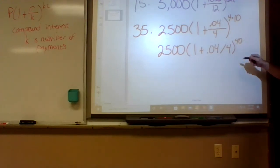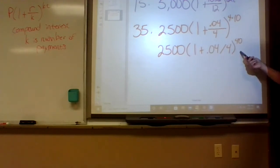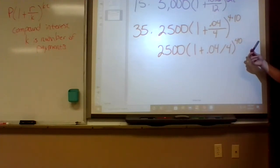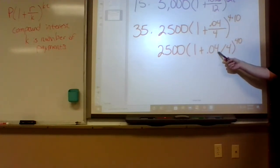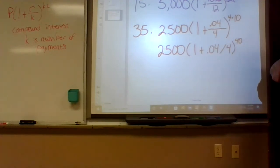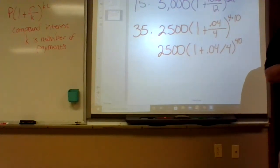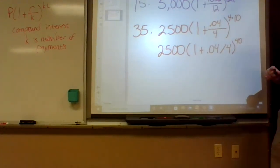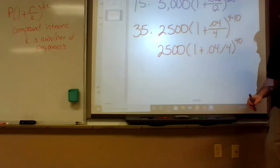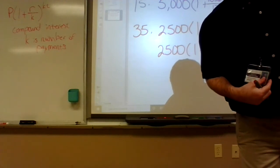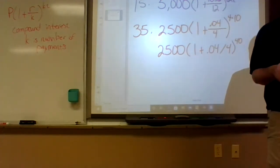Instead of putting 4 times 10 separately, you can just put 40 right there in the exponent. Make sure you typed 2500, not 25000. Division in the formula is handled automatically by order of operations if you enter it correctly.